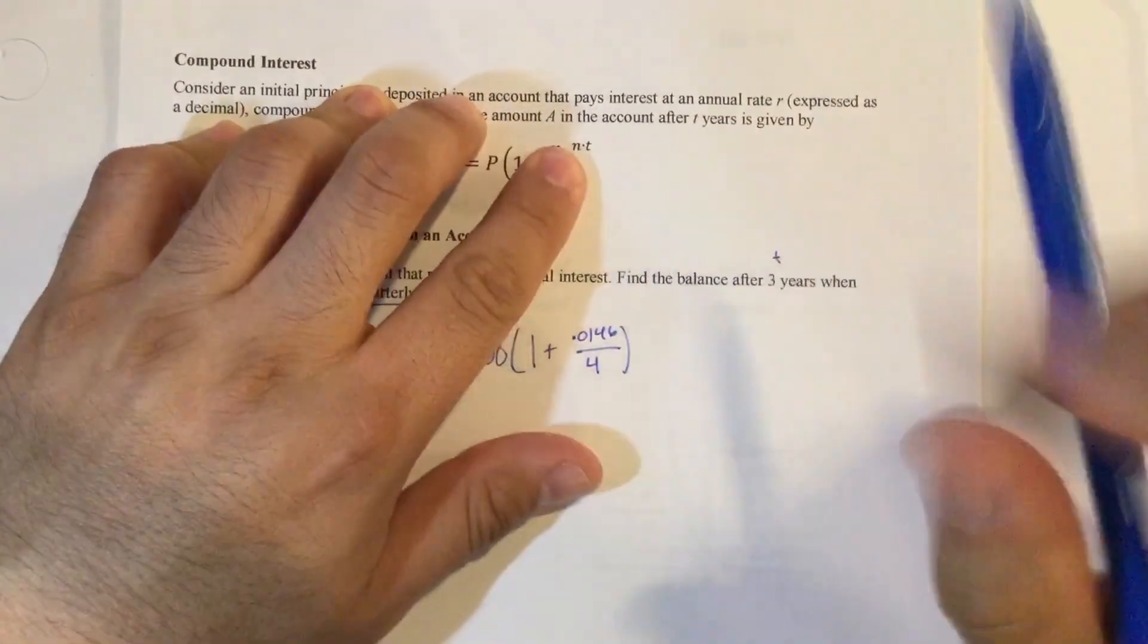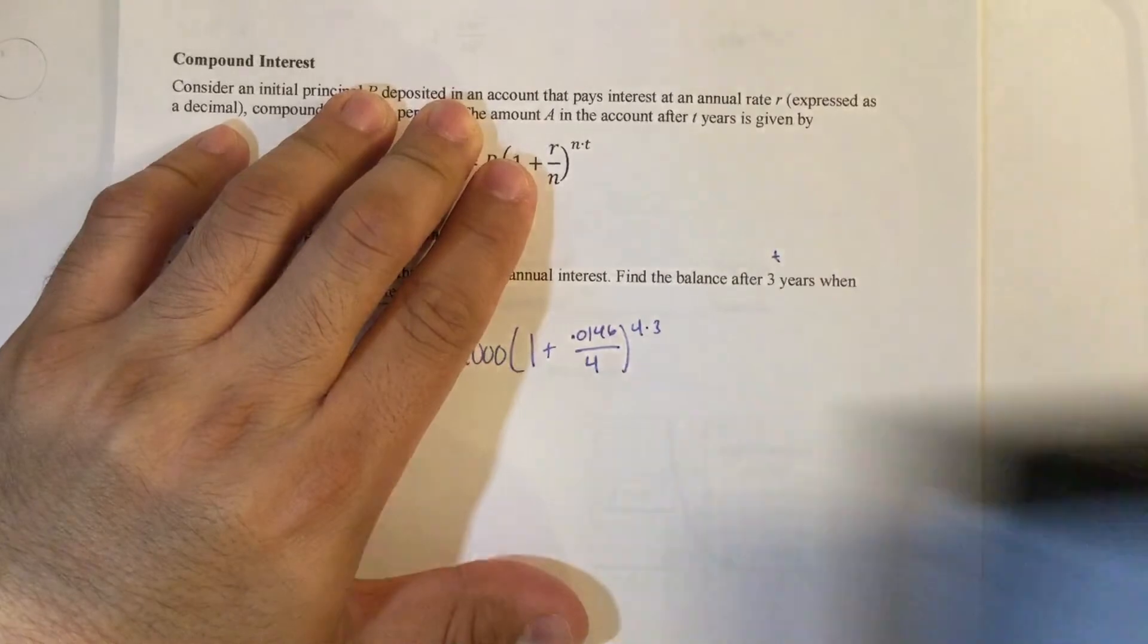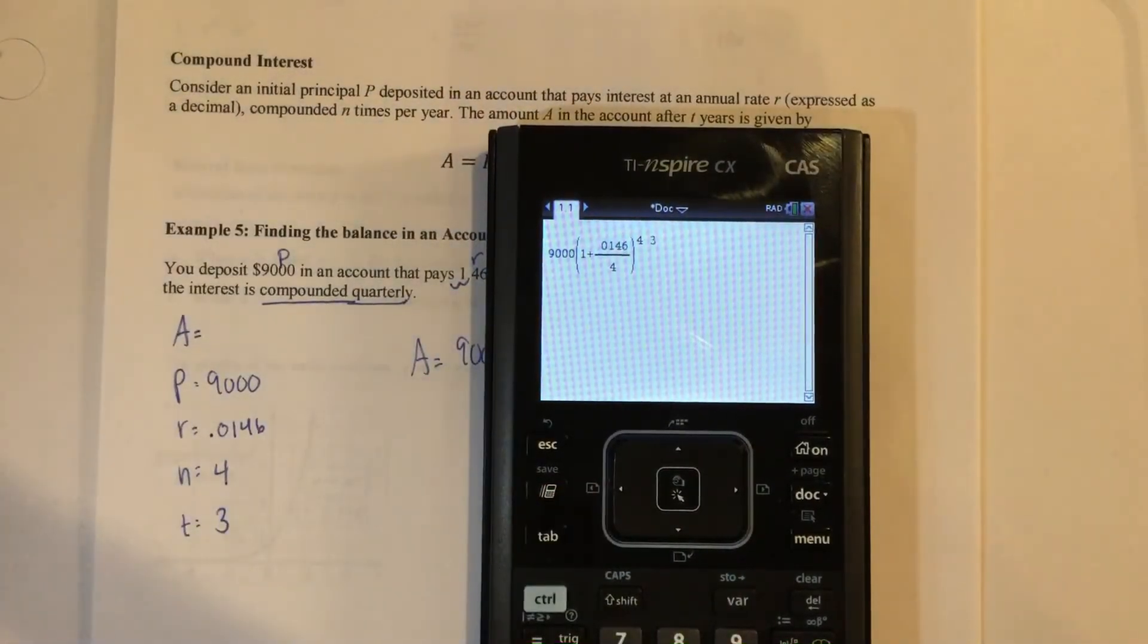You need N again, which is four, times the number of years, three, which is 12. But I'll continue writing it as four times three. So that's 12. Press enter.